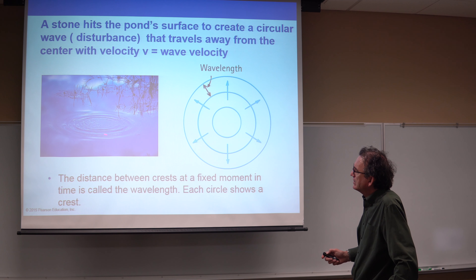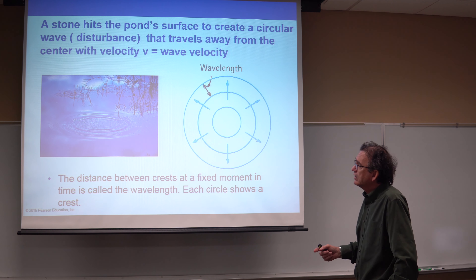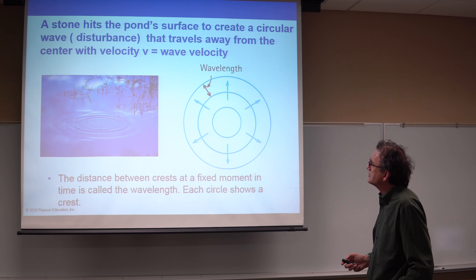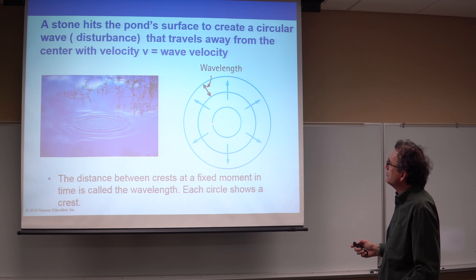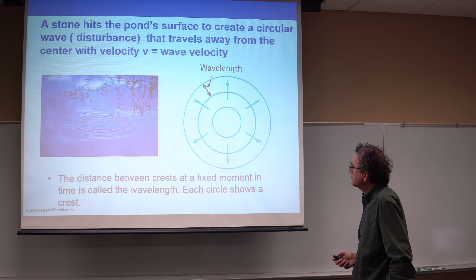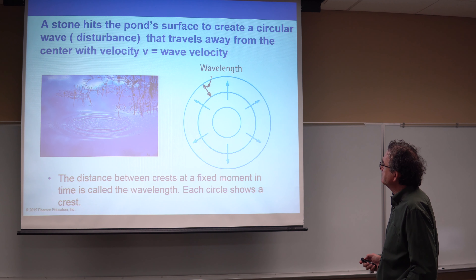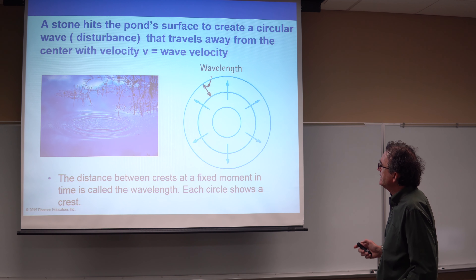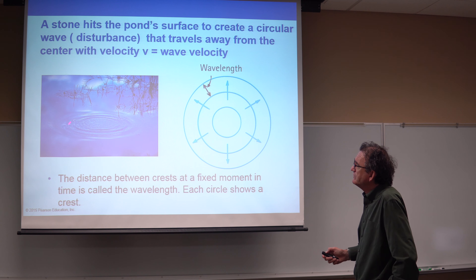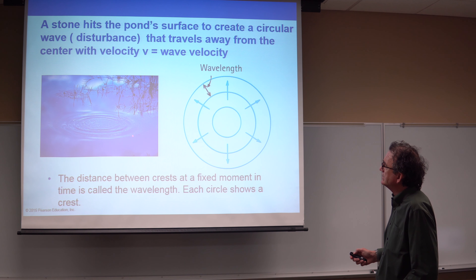I'm going to draw a picture showing an expanding circle of waves. If we identify the crest of the wave on each circle, we have a series of concentric circles placed at each crest. There'll be a crest here, then a crest here, and another crest, all the way out until we no longer have a disturbance. We represent these crests with circles expanding outward. The distance between these crests at a fixed moment in time is called the wavelength.